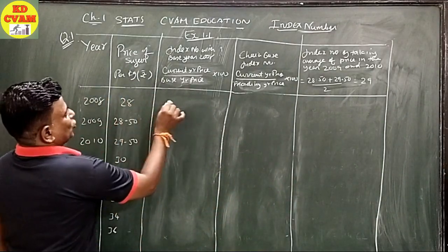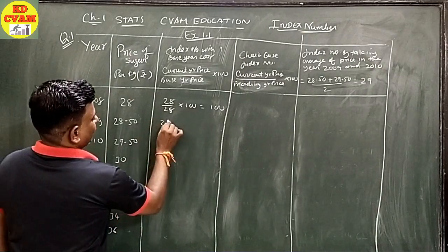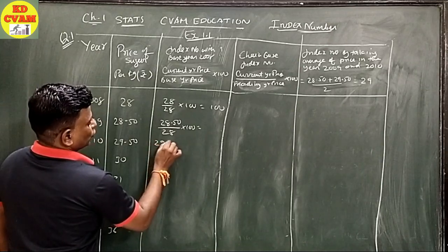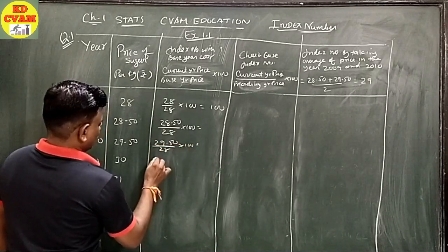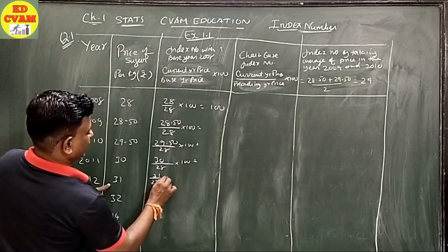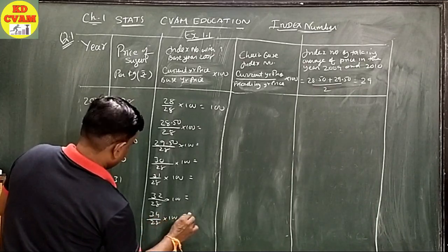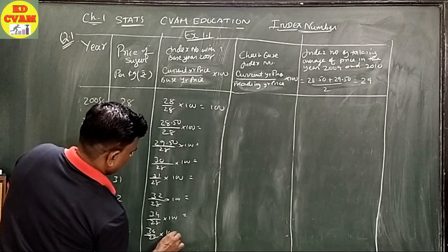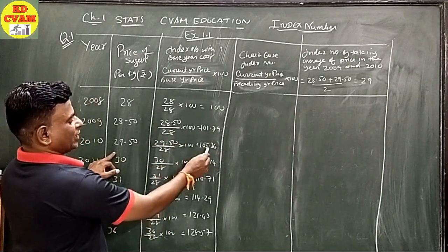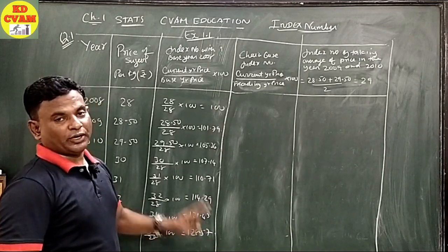Pehla waala: 28 upon 28 into 100 — toh 100 fix hai. Baaki sab mein: 28.50 upon 28 into 100, 29.50 upon 28 into 100, 30 upon 28 into 100, 31 upon 28 into 100, 32 upon 28 into 100, 34 upon 28 into 100, aur 36 upon 28 into 100. Calculations: 101.79, 105.36, 107.14, 110.71, 114.29, 121.43, aur 128.57.